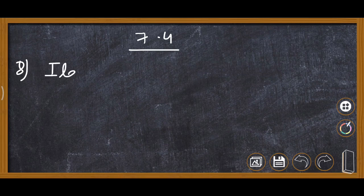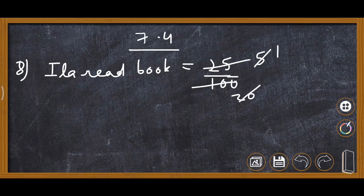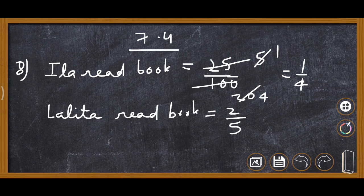Illa read 25 pages out of 100, so Illa's fraction is 25 upon 100, which simplifies to 1 upon 4. Lalitha read 2 upon 5 of the book. Now we need to find which is greater — 1 upon 4 or 2 upon 5.